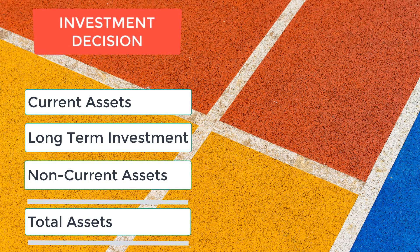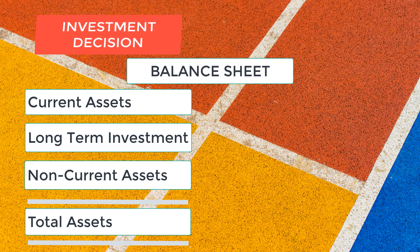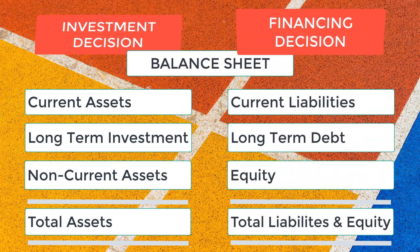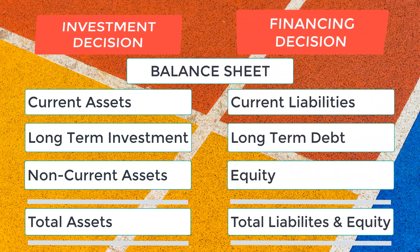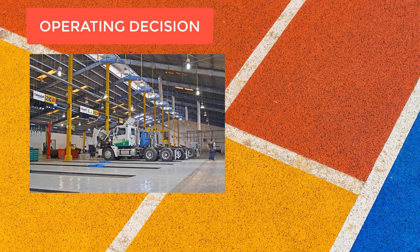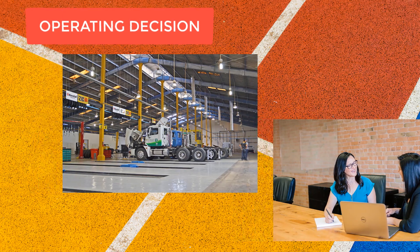In simple terms, investment decision is about the asset side of the balance sheet, while financing decision is about the liabilities and equity side of the balance sheet. The third main type of decision is operating decision, which deals with the day-to-day activities of the firm, focusing more on working capital and how to finance them.